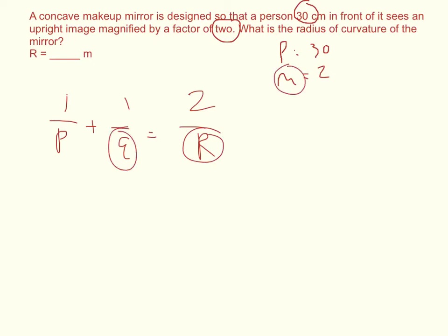The magnification is equal to negative Q over P, and solving for Q, I get Q is equal to negative M times P.